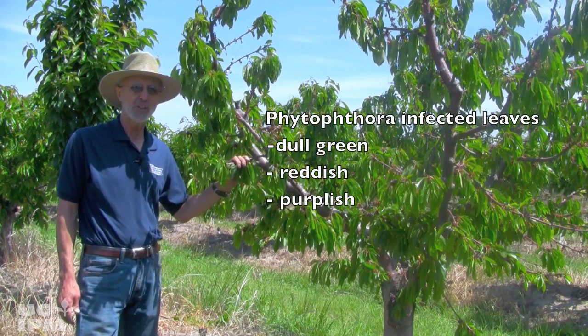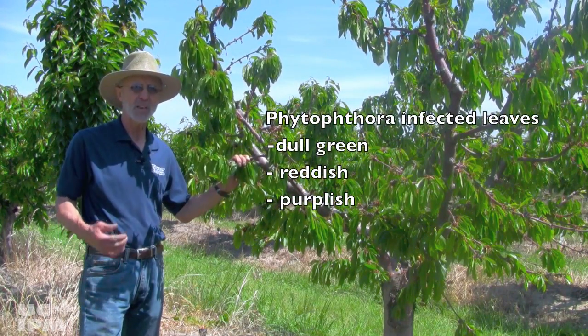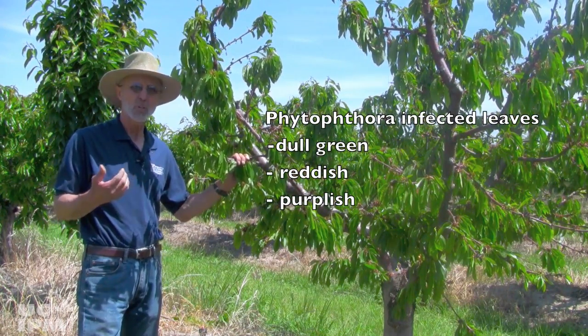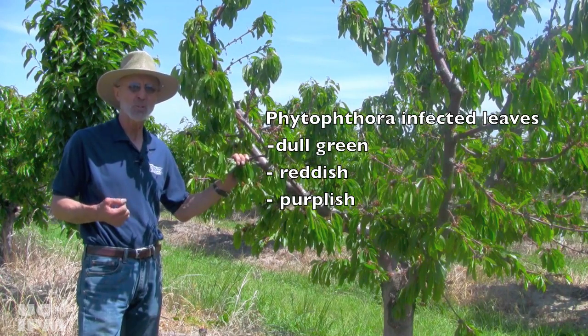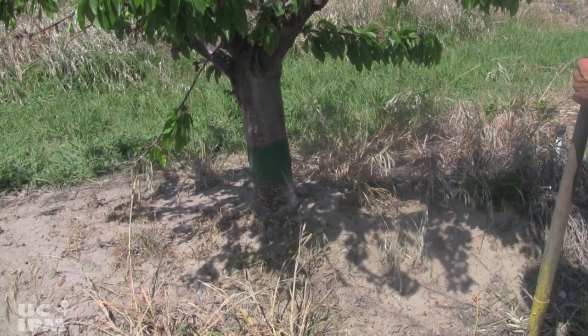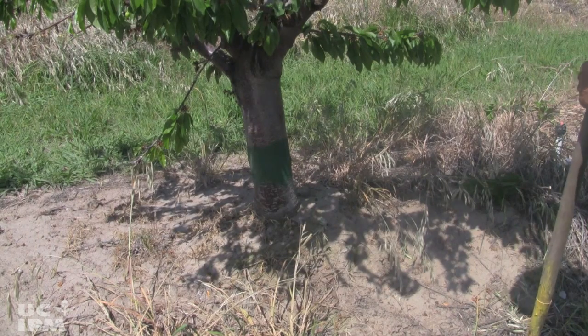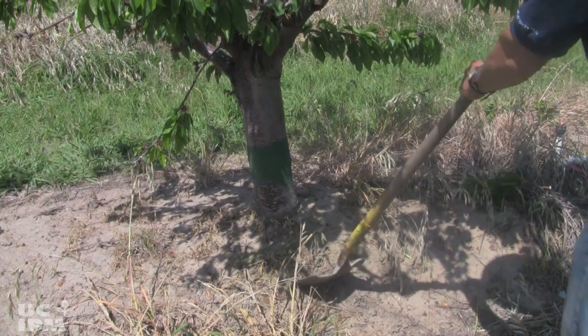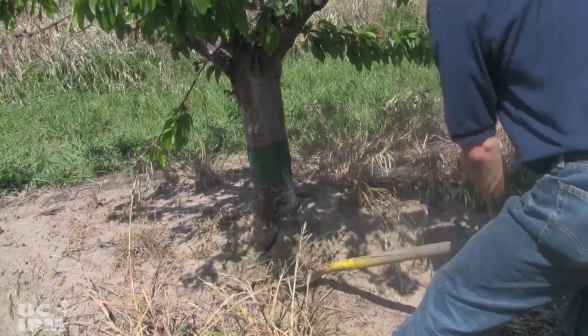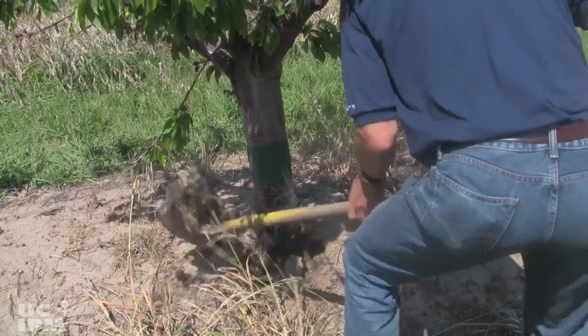Now we do a lot of times with Phytophthora see kind of a reddish in the leaves — a dull green, reddish, or purplish. Now I'm going to dig on this tree and try to find the Phytophthora canker below ground.